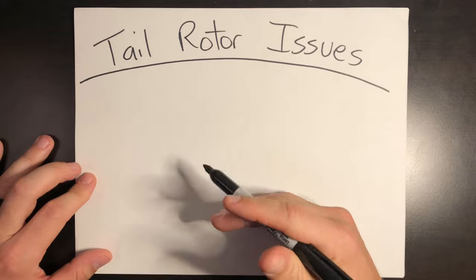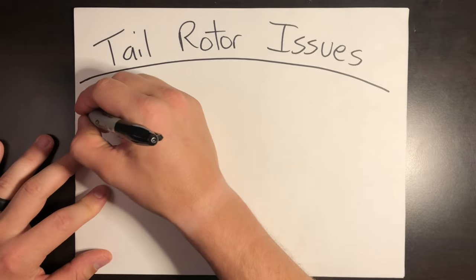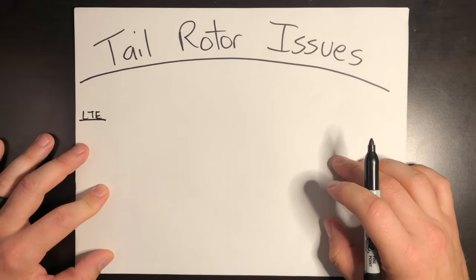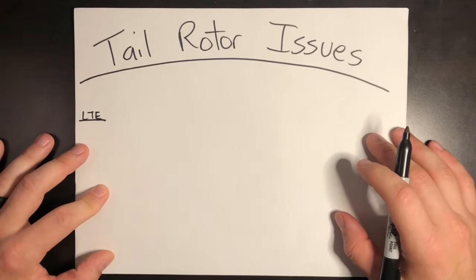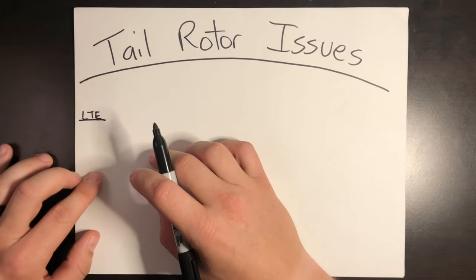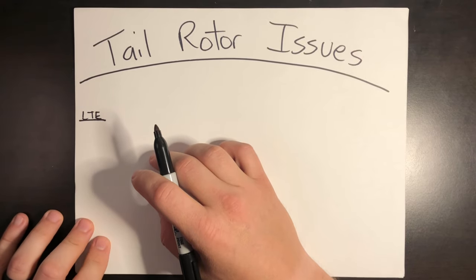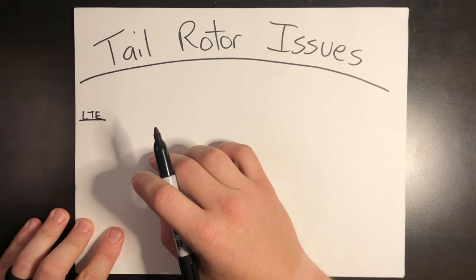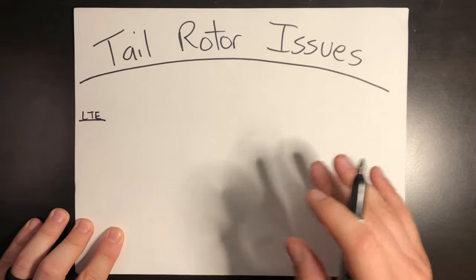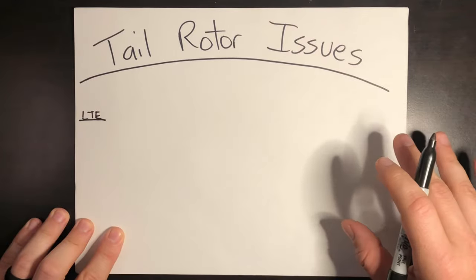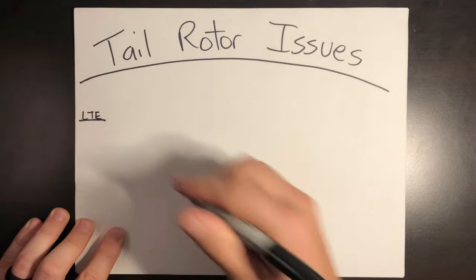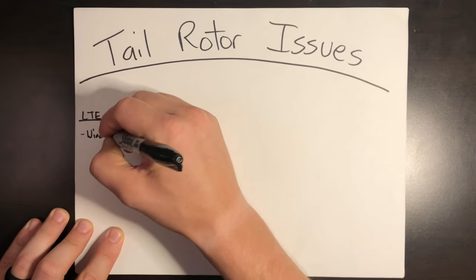There are four big categories to cover in this video, with the first one being loss of tail rotor effectiveness. I have a whole video on this one covering it in great detail — I'll put a link in the description and above. Simply put, this is an uncommanded rapid right yaw that doesn't stop on its own and can cause loss of aircraft control. In counterclockwise rotating aircraft, this is a spin to the right. For all these examples, this will be counterclockwise rotating systems, so anything clockwise is just reversed.